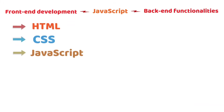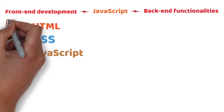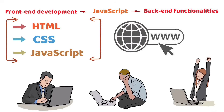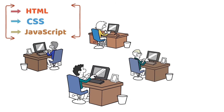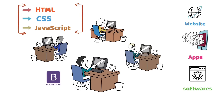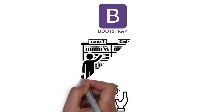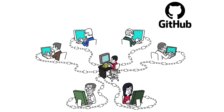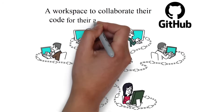Although these programs differ in how they are written and in functionality, all three come together to create websites you use every day. While these programs are enough for developers to create websites, apps, and software, some other programs like Bootstrap, Node.js, and GitHub help the developers. For example, Bootstrap is essentially a library of code so developers can have elements of their applications already written out for them. Another example is GitHub, which allows developers in a group to collaborate on their code in one place.